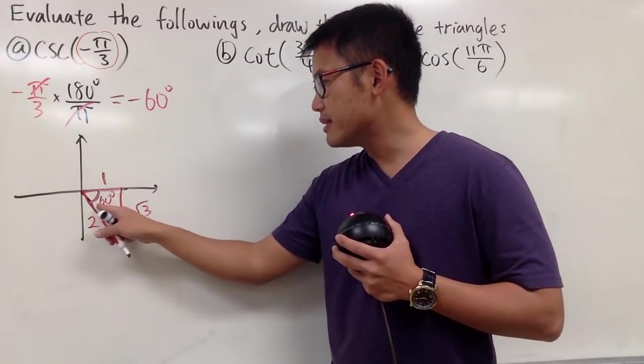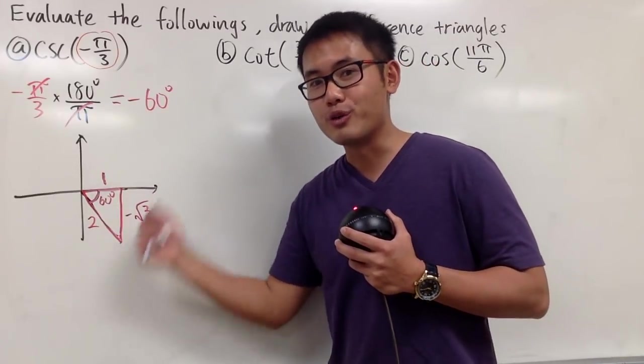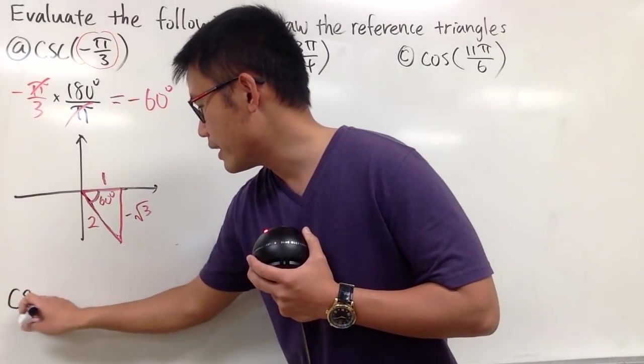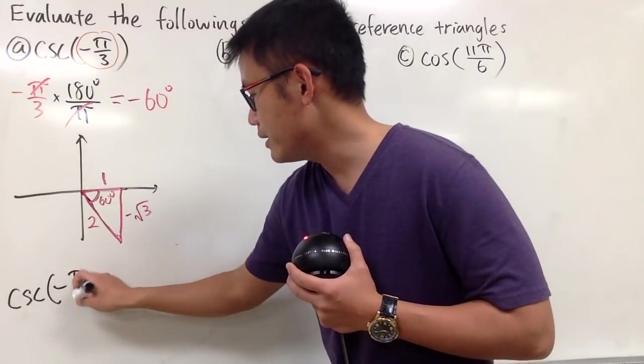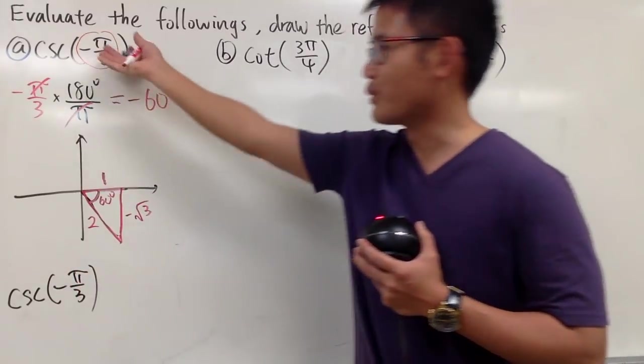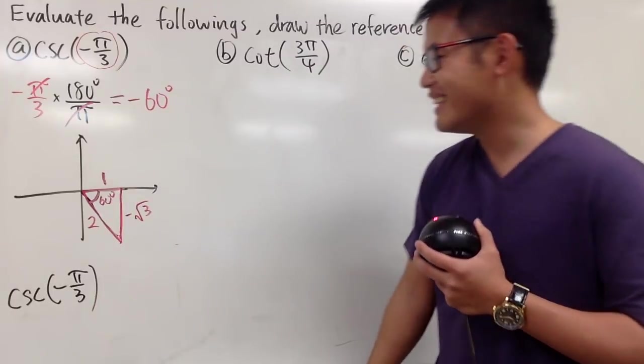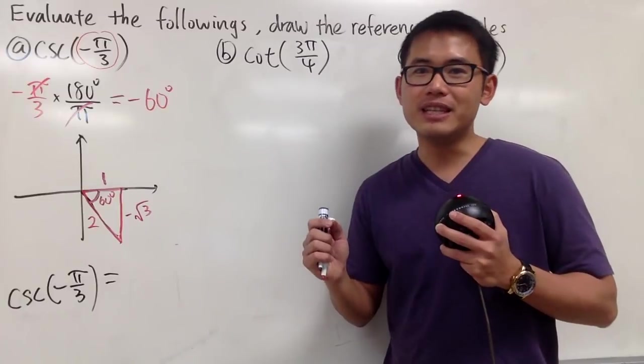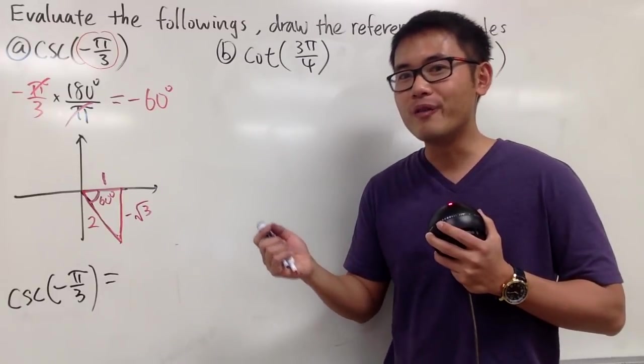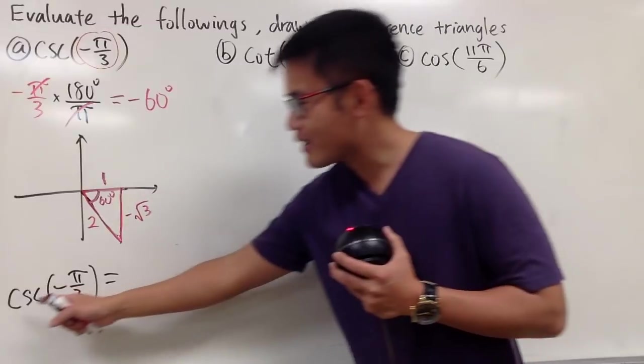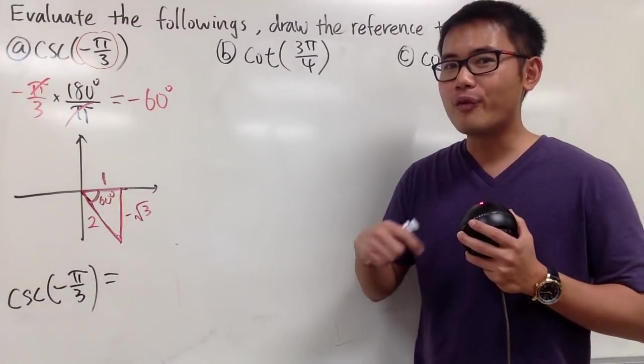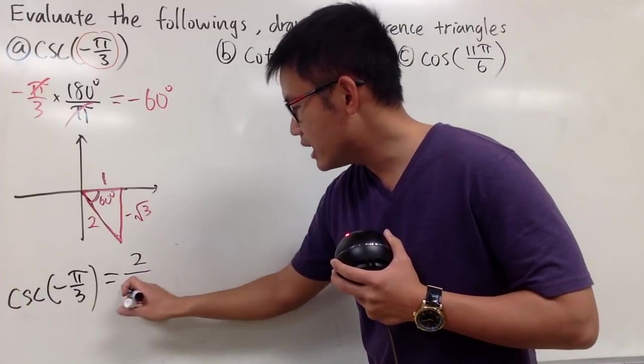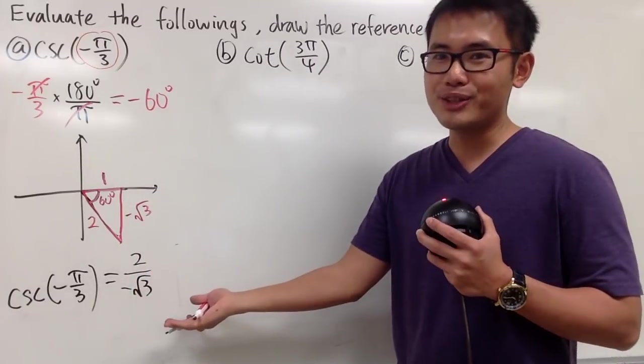So that's the picture. Once again, I didn't write down negative 60 degrees because I'm talking about a reference triangle here. So in the end, we can just say cosecant of negative pi over 3. I have to refer back to the original question. We can look at this picture for it. Remember, cosecant is the same as 1 over sine, and sine is y over r. Therefore, cosecant is r over y. r is 2, y is negative square root of 3. So this is pretty much it.